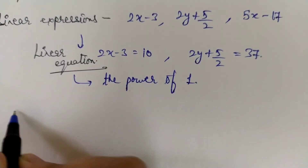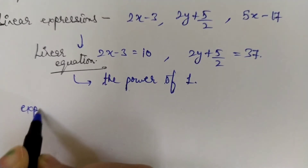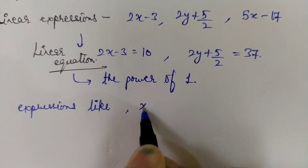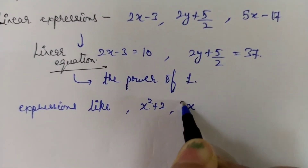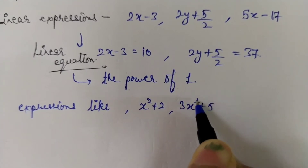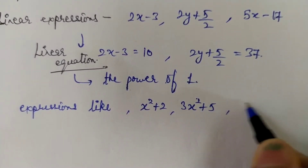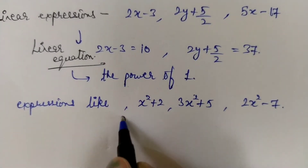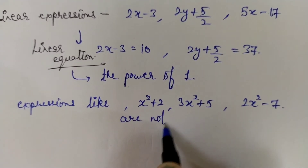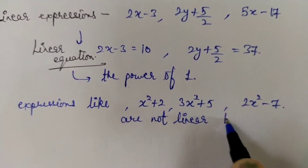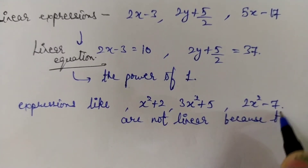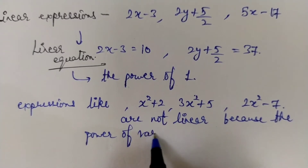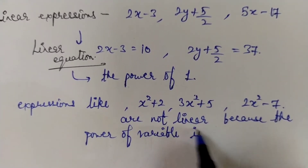If you have expressions of this type — expressions like x squared plus 2, 3x squared plus 5, 2x squared minus 7 — these types of expressions are not linear, because the power of the variable is 2.